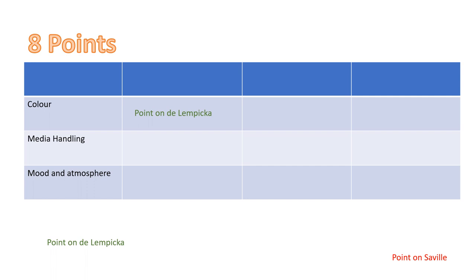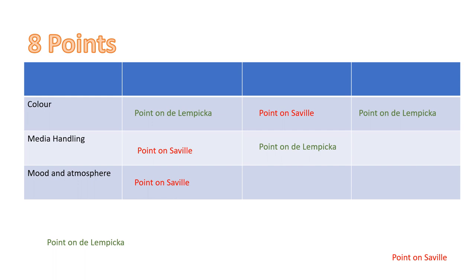For example, you might decide that you know enough about colour to make a point on de Lempicka, a point on Saville, and then come back and make a further point on de Lempicka. For media handling, you might want to start with a point about Saville and then go on to a point on de Lempicka. You might feel that you have more knowledge about mood and atmosphere, so decide that your final three points will come from this section. You have a choice, but you're best to cover all three sections and try to mention both artists in each section.